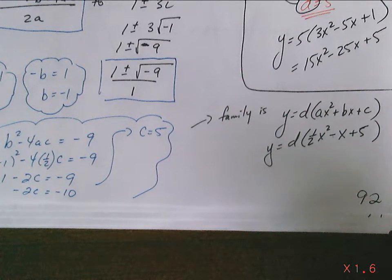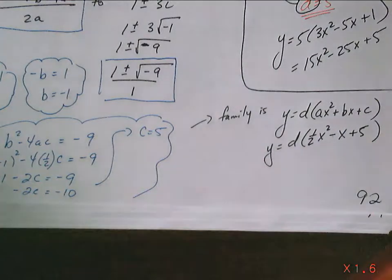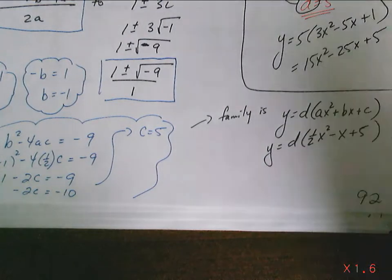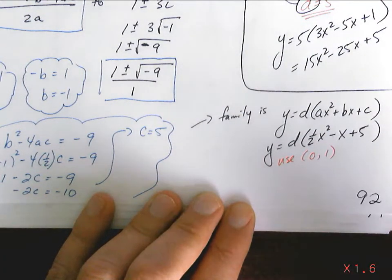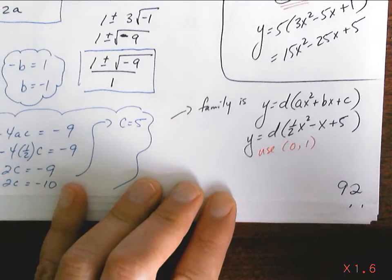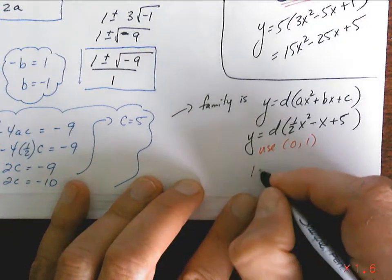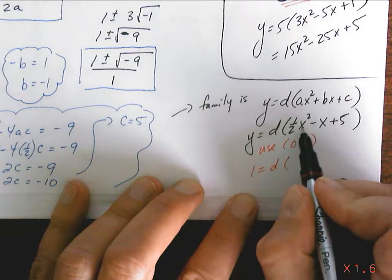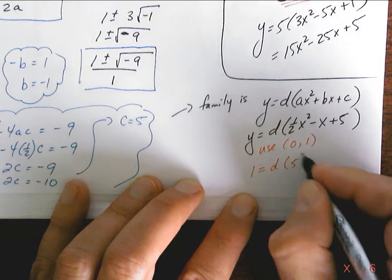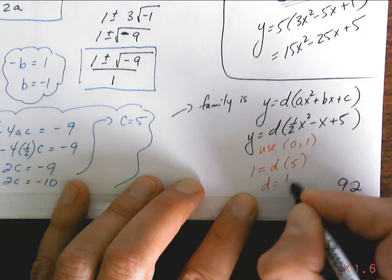OK. So how do we get the specific curve? What do I do now? Put in the 0 and 1. So you have 0 comma 1. It's going to go in for y and x. So you're going to get 1 equals d. 0 for x is great because that's 0, that's 0. So it's 5. So d equals 1 over 5.